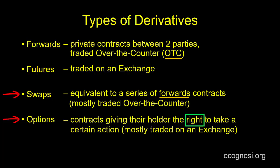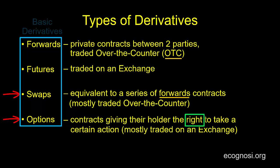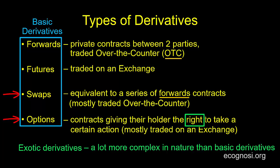At this point, I'd like to say that there are other types of derivatives as well. These four are just what might be considered the basic ones. Other types of derivatives include what might collectively be referred to as exotic derivatives, and a general comment on exotic ones would be that these are a lot more complex in nature than basic derivatives.